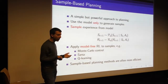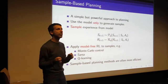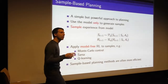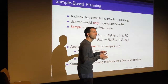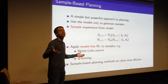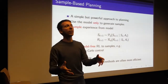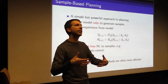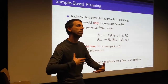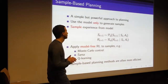So instead of knowing that 75% of the time the wind will blow me right and 25% of the time the wind will blow me left, I'm just going to randomly sample something from the environment. I got blown right on this occasion, and I'm going to learn from that sample, just like we do when we interact with the real world.